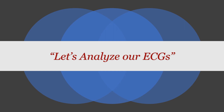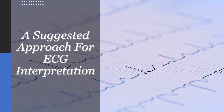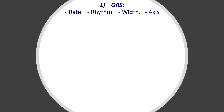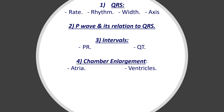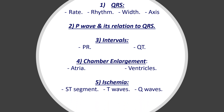Let's now analyze the ECG together. It's always about having a clear, systematic approach when it comes to ECG interpretation. Always start by looking at the QRS complex and ask yourself four questions: What's the rate? What's the rhythm? What's the width? And what's the axis? Then look at the P wave and its relation to the QRS. Then look at the intervals — the PR interval and the QT interval. Then check for chamber enlargements, both atrial and ventricular. Then look at ischemia signs: ST segment, T waves, and Q waves. And finally, anything else.